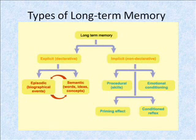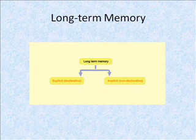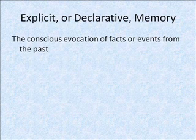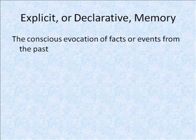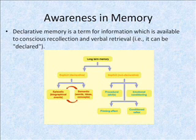Long-term memory can be broken down into several categories, the first two of which are explicit or declarative memory, and implicit or non-declarative memory. Long-term memory is involved in the conscious evocation of facts or events from the past. Long-term memory seems to have awareness — a term for information which is available for conscious recollection and verbal retrieval — and therefore this type of memory can be declared.